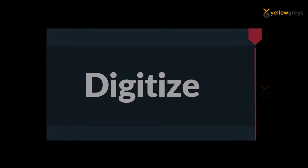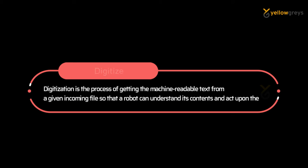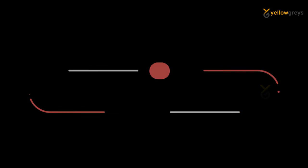What is digitize? Digitization is the process of getting the machine-readable text from a given incoming file so that a robot can understand the content and act upon them.